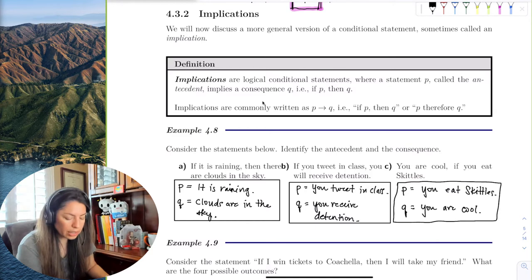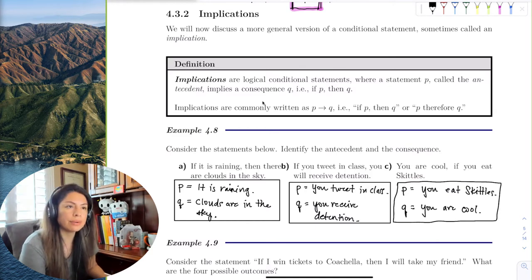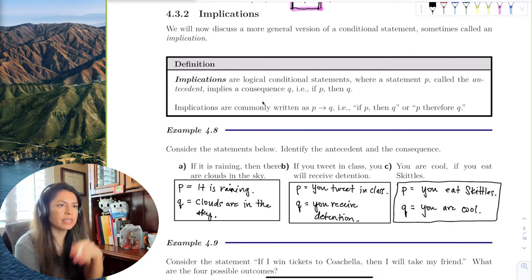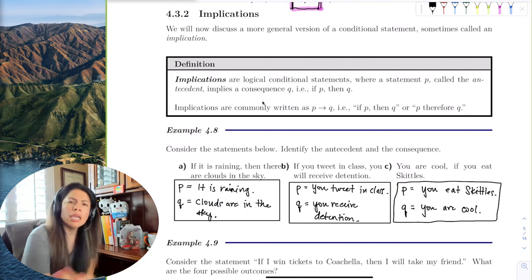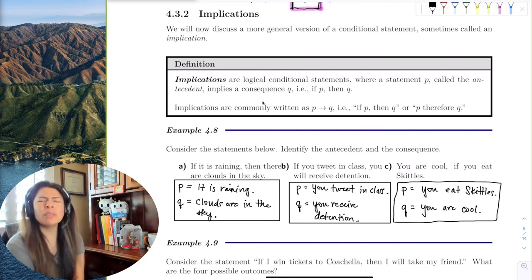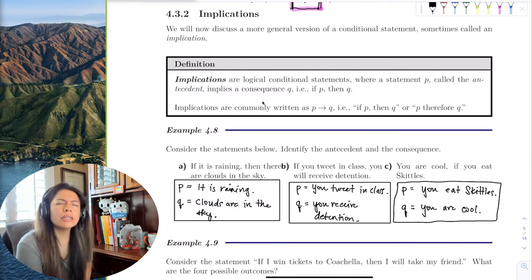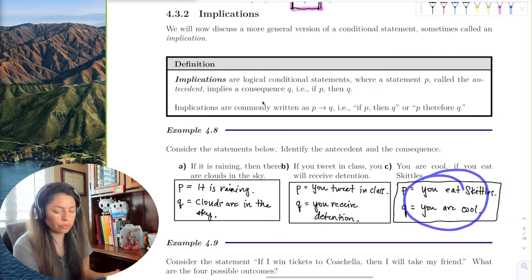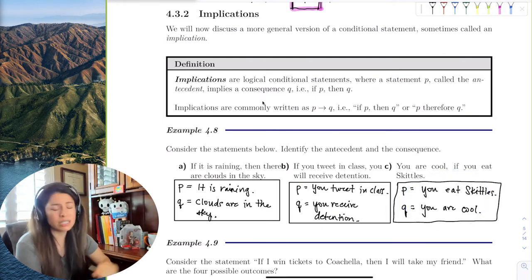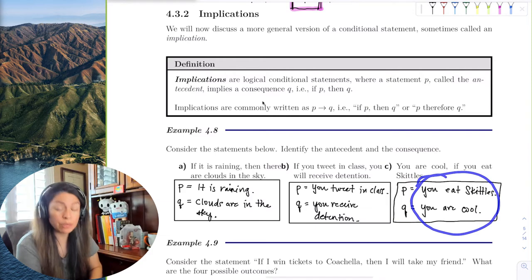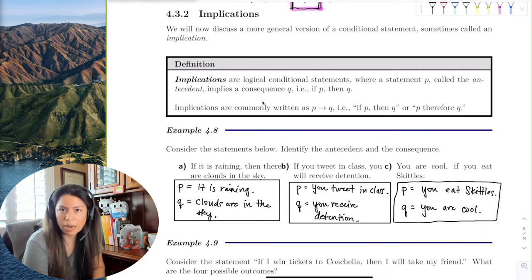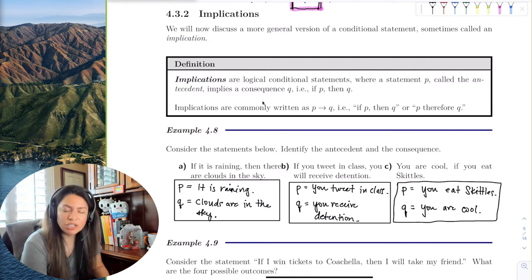Now we can see how implications can spark full arguments. You might say you're cool if you eat Twix, or Starburst — and we could have a whole conversation about which candy makes you cool. That's exactly why we need logic and truth tables: to give valid reasoning to our arguments.